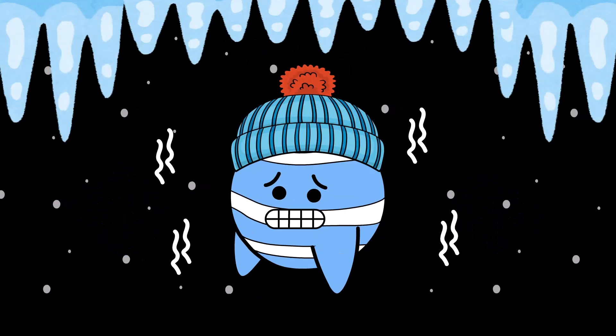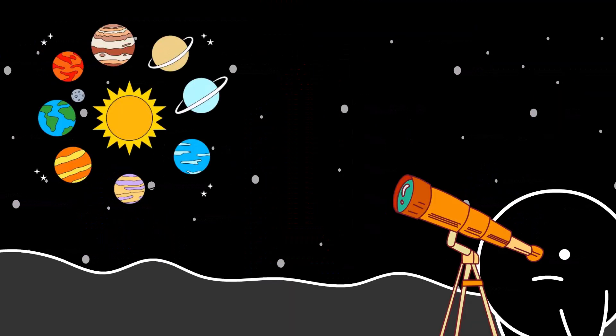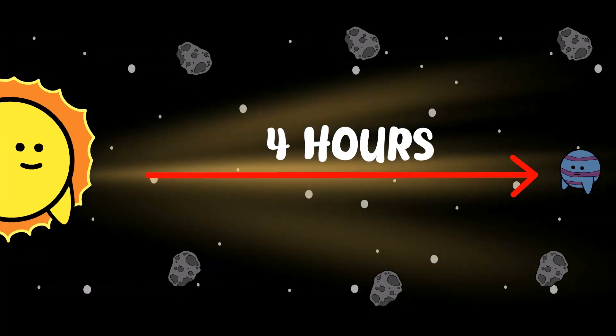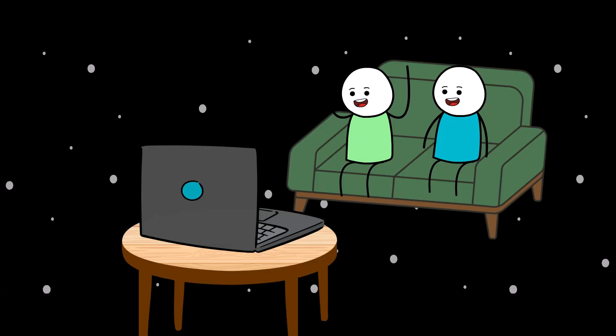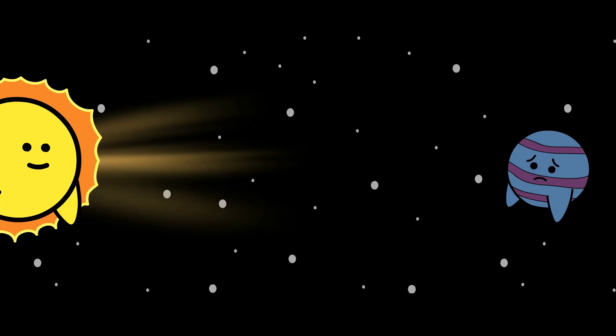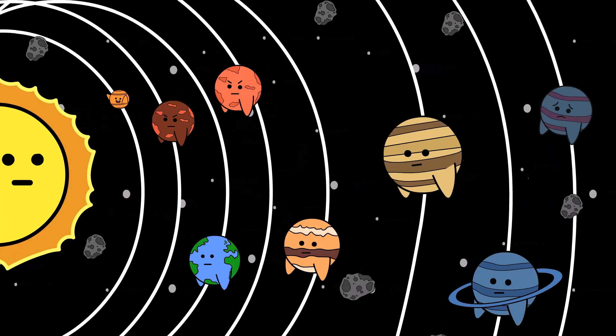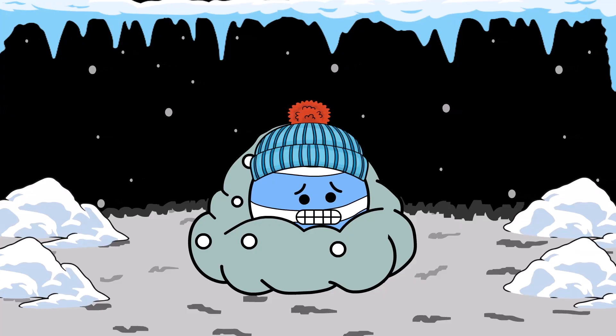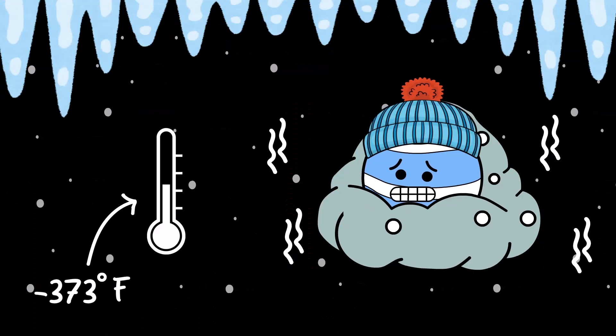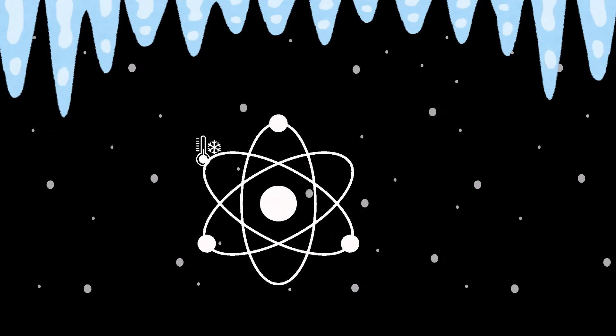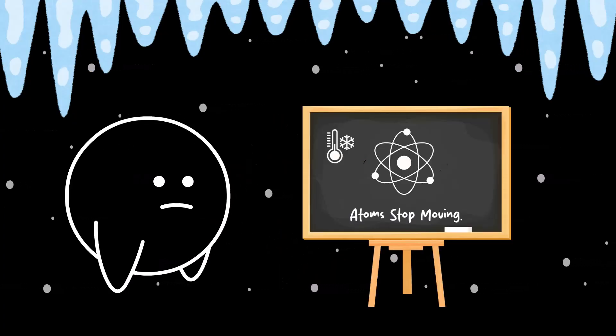Neptune isn't just cold, it's stupid cold. We're talking about a planet so far from the sun that sunlight takes over four hours just to get there. You could watch an entire movie, make popcorn, scroll through your phone, and the light would still be on its way. The average temperature is a jaw-dropping negative 373 degrees Fahrenheit, just a few degrees above absolute zero, the point where atoms basically stop moving.